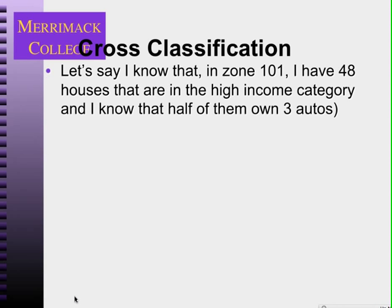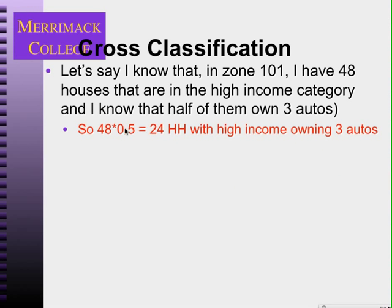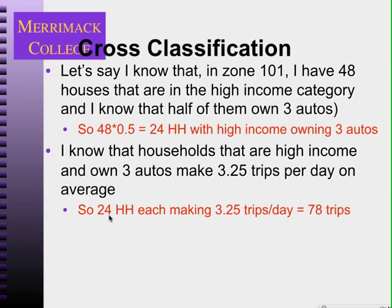Let's say that we have zone number 101, and it has 48 houses that are high income — however we define that. I know that half of those own three automobiles. So 48 high-income households times half gives the number of households that are high-income owning three autos. Those households, on average, make 3.25 trips per day, for a total of 78 trips for that category.